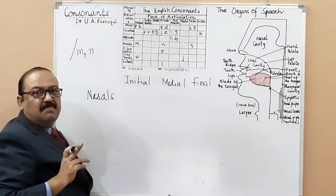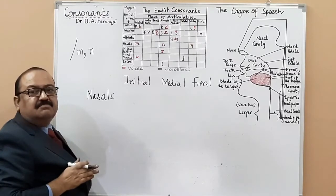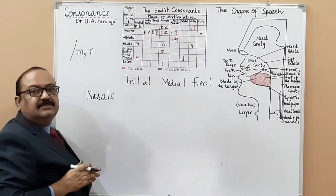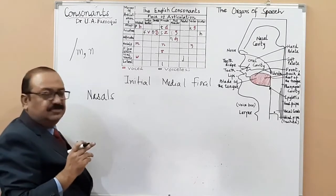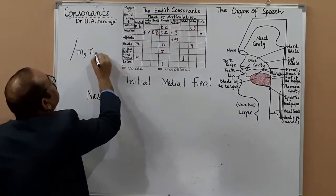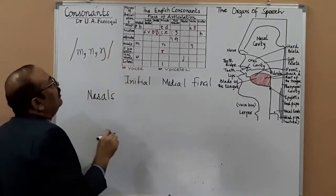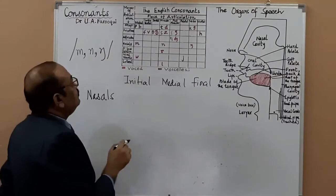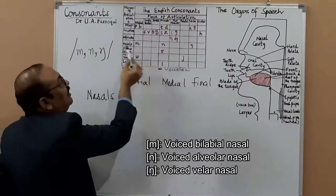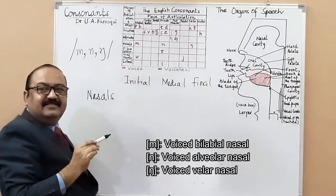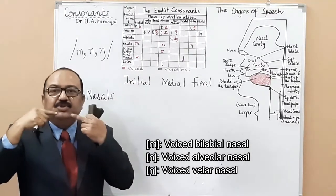Then /n/ — mmm, no, mmm, mmm. This is how it's pronounced. /m/ is a voiced bilabial nasal. Why bilabial? Because your two lips are articulating — they're touching each other: mmm.